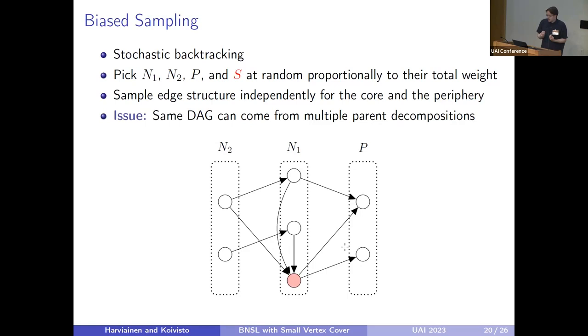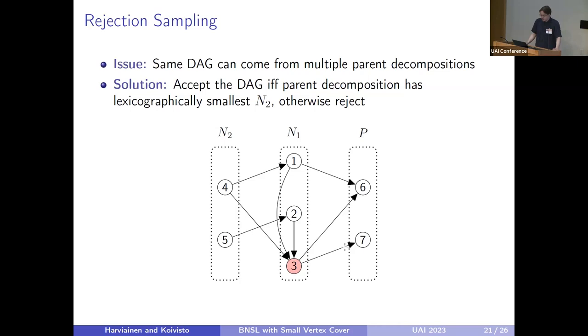Because of the way we compute these total weights, we can apply stochastic backtracking. We first pick those sets N1, N2, P and S at random proportionally to their weights. Then from within that parent decomposition, we can sample those edge structures for the core and the periphery independently of each other. But as I mentioned before, this makes some of the DAGs be more likely than the others in the sense that they aren't supposed to be, because they can come from multiple parent decompositions.